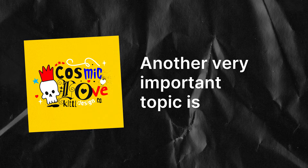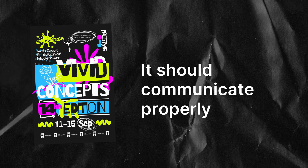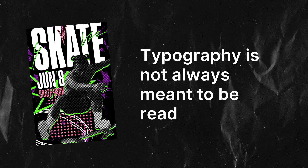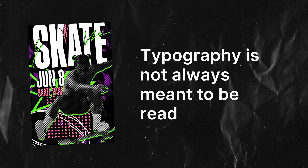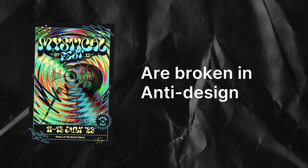Another very important topic is accessibility. Design should work for all — and I'm not talking about personal styles and preferences. If your goal is to communicate, it should communicate properly. Anti-design is known for not caring about legibility, and that could be challenging for people with visual impairment. However, typography is not always meant to be read. Sometimes typography can communicate without even being legible. It's interesting how the boundaries of typography are broken in anti-design, and the traditional purpose of typography is totally ignored.